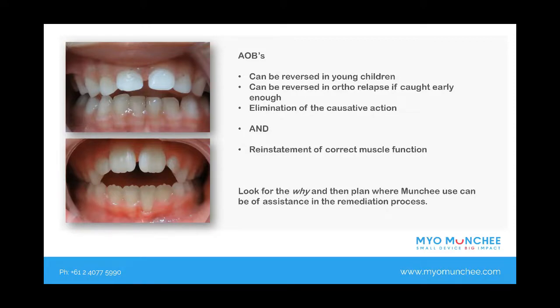The elimination of the causative action is super important, and then follow that up by the reinstatement of correct muscle function — because it is the muscle function that is going to guide how and when the presentation of the anterior open bite is going to be able to be resolved. Picking your cases and understanding the why is so important.